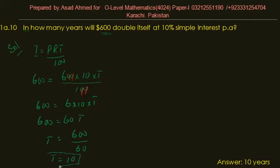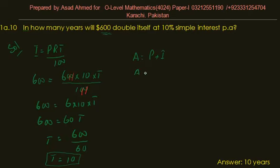In 10 years, the amount of $600 will double at the rate of 10% per annum. The principal is $600 and the interest is $600, so the total amount doubles to $1200 at time t = 10 years. I'm sure this must have helped you understand.